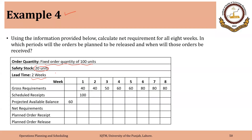The basic logic is the same as we saw in the last lecture, but there we had a planned order release in case we had some net requirement. When there was a net requirement greater than or equal to zero, then we had a planned order release. Now, in this case, this quantity of zero actually changes and we will have a planned order release whenever the quantity is approaching the safety stock.